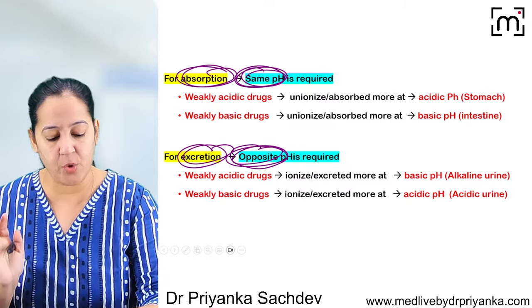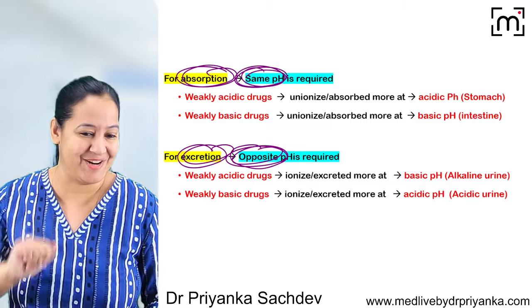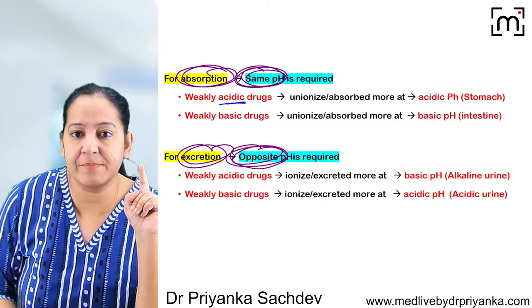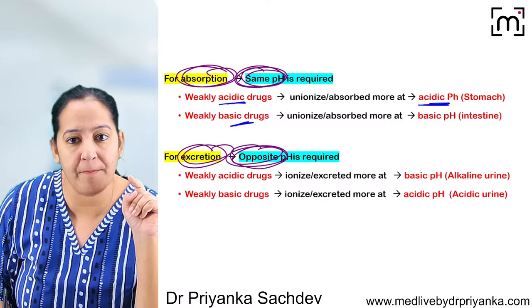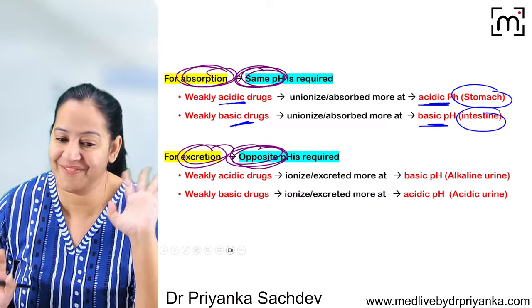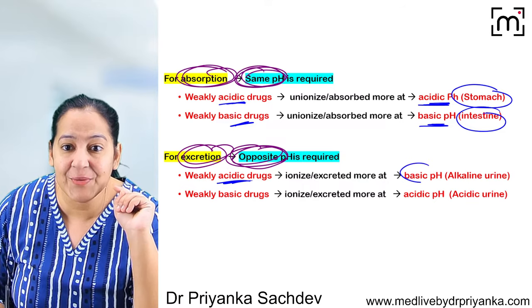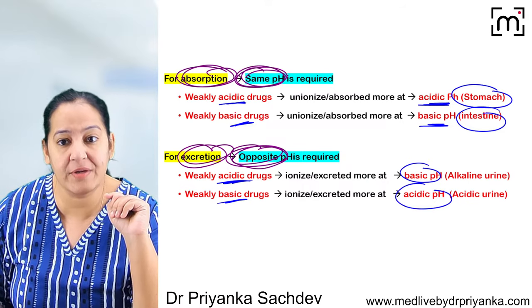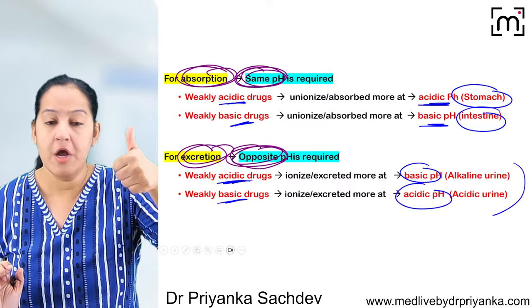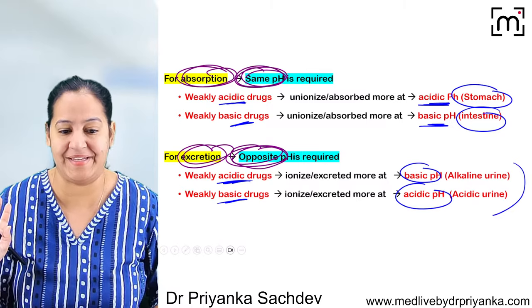For excretion, only one organ is involved — the kidney — whether the drug is acidic or basic. Opposite pH is required for excretion: acidic drugs are excreted in basic urine, and basic drugs are excreted in acidic urine. The urine pH can be changed to facilitate excretion. So in the same organ, the pH of the urine can be different.